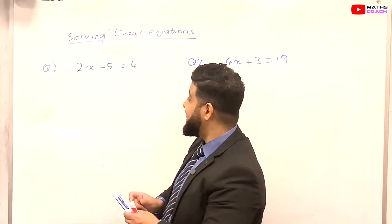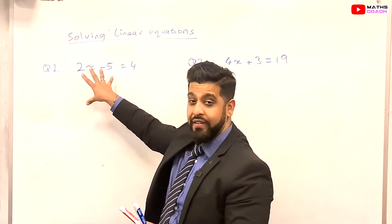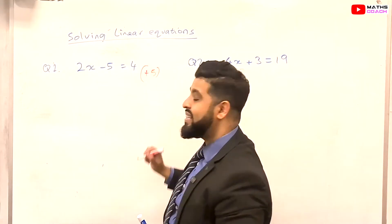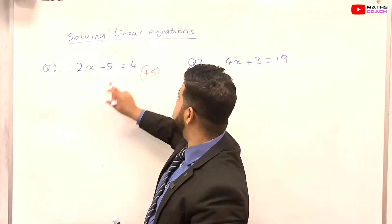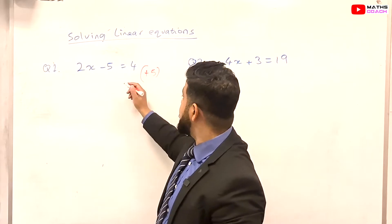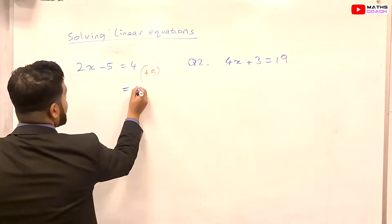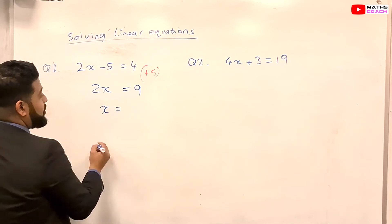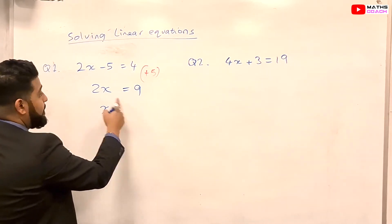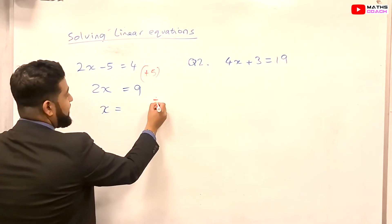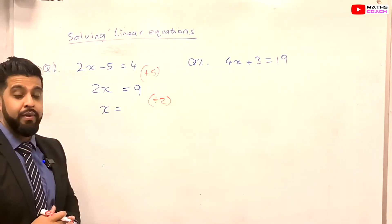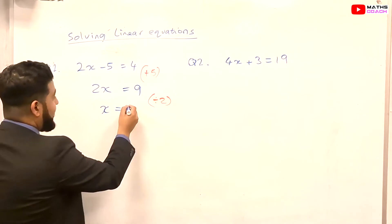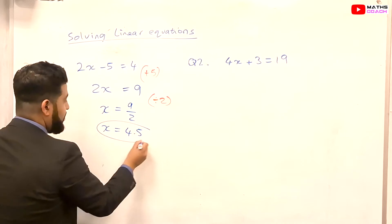We want to get rid of the minus 5. To get rid of minus 5, we add 5. Because it's an equation, we keep it balanced — we add 5 to both sides. The minus 5 disappears, and the right side gains an extra 5, so it becomes 9, and we're left with 2x. Now we want to get rid of the 2, so we divide both sides by 2, because the opposite of multiplying by 2 is dividing by 2. So 9 divided by 2 gives x equals 4.5.